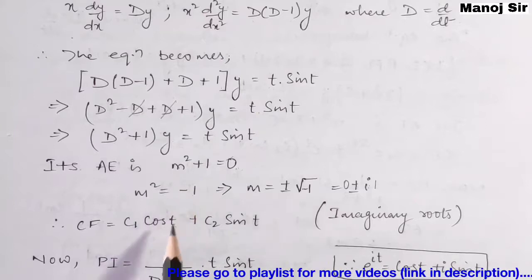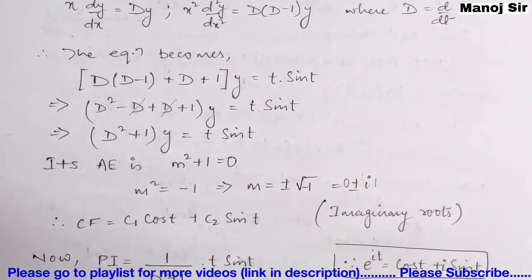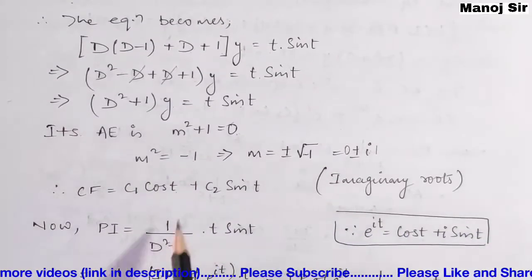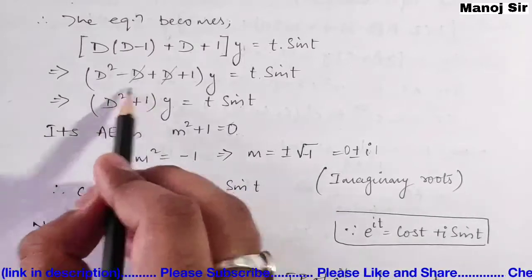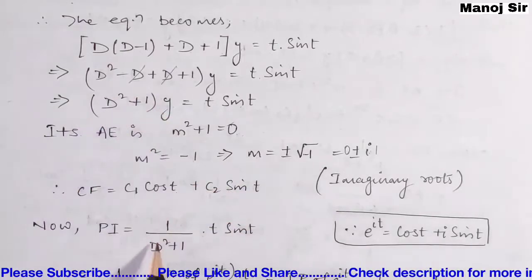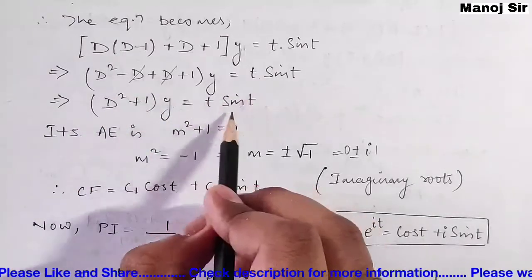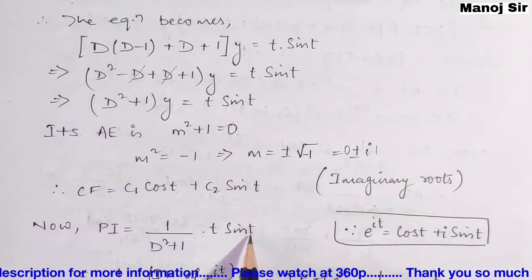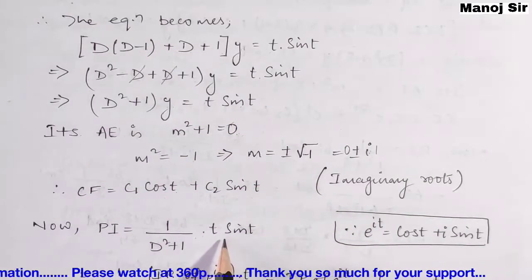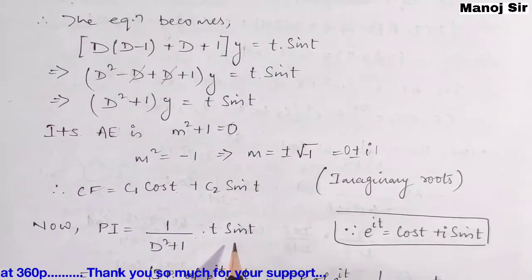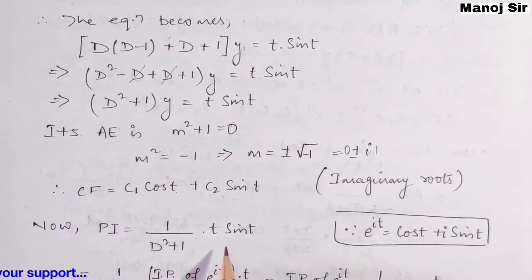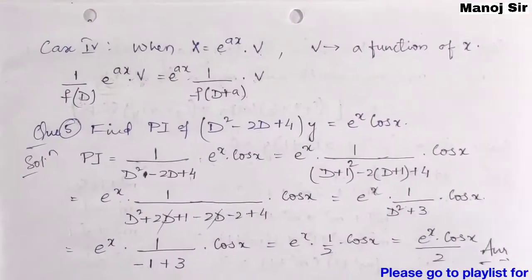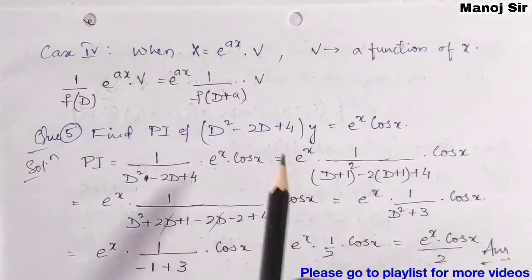Now we need to find PI (particular integral). PI = 1/(D²+1) · t·sin(t). Again, we have a multiplication form — one function must be exponential to apply the exponential shift formula.